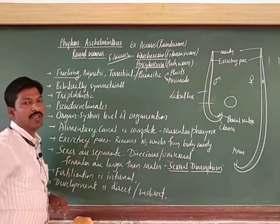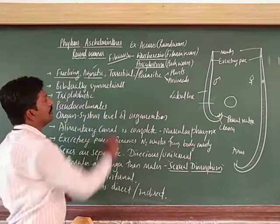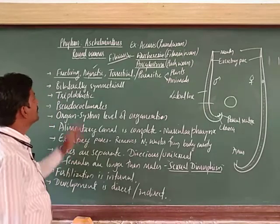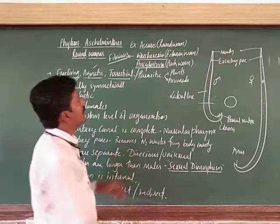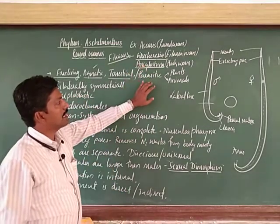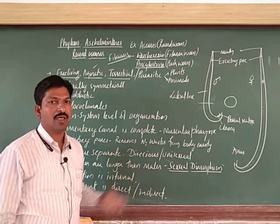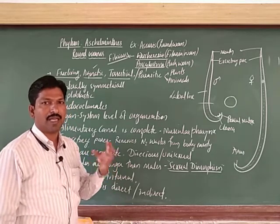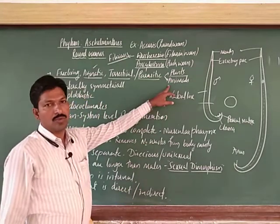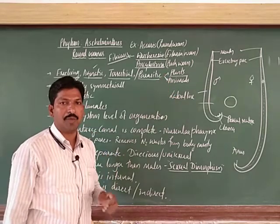They are free living either in water or in moist soil. Aquatic means they may be in water, or they may be terrestrial, present in moist soil — that is what we call free living. Some are parasitic, as I gave the example: Ascaris and Wuchereria are parasitic. They may be found in the parenchyma tissue or soft areas of plants — flesh part of flowers, buds — or they may be parasitic in animals.